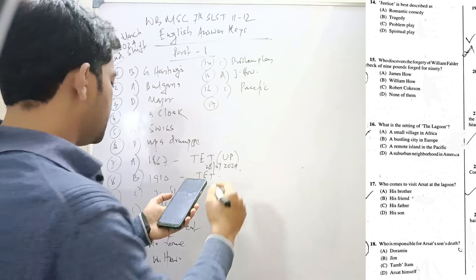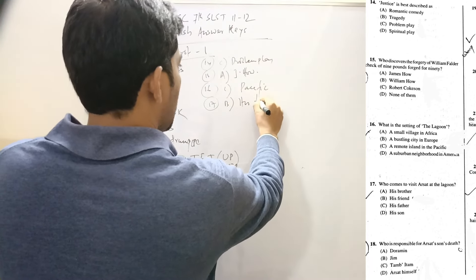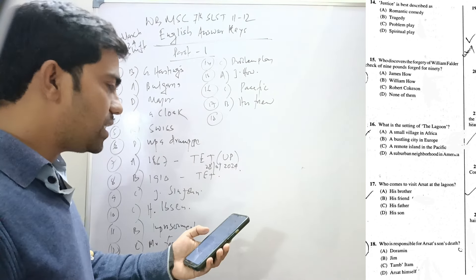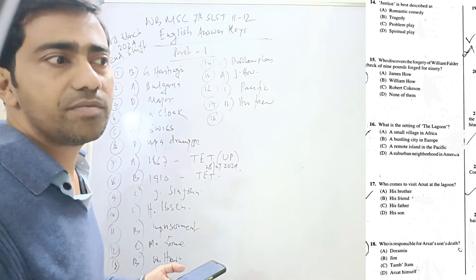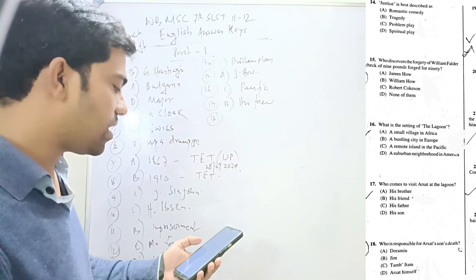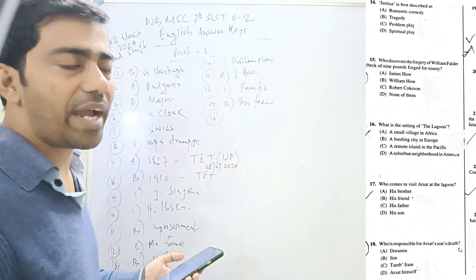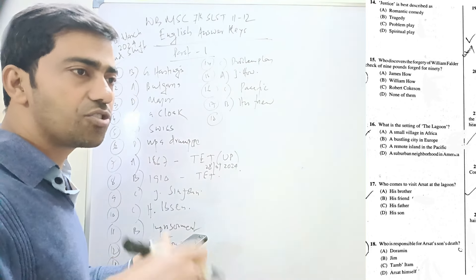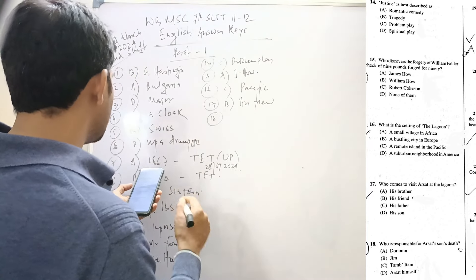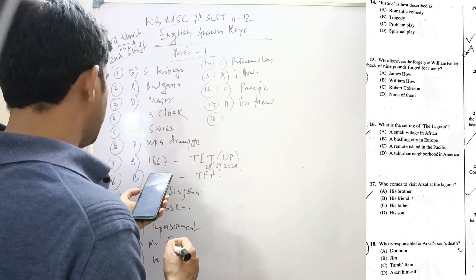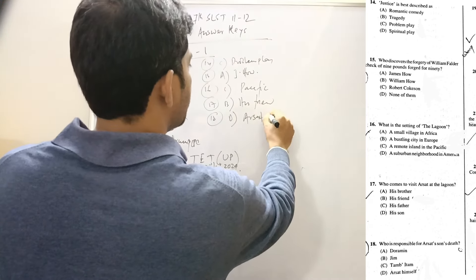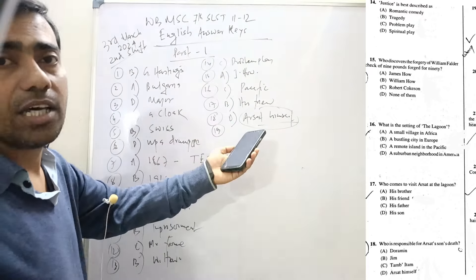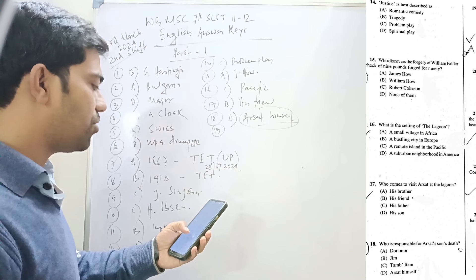Eighteen: Who is responsible for Arsat's son's death? Arsat had not had any son, but his wife Diamelen may have conceived a child, a baby. It is predetermined - a child. So with the death of Diamelen, his son or child also died. The question is wrong. Arsat himself would be Arsat himself if it is taken as an analytical answer.